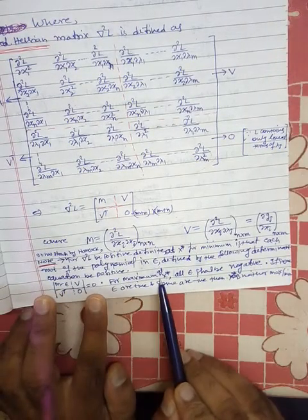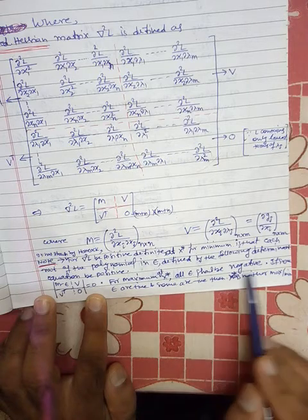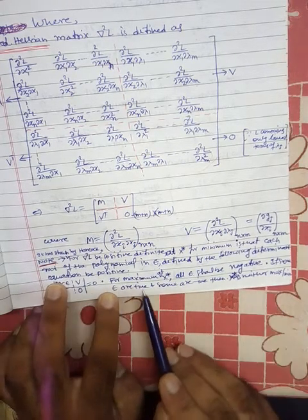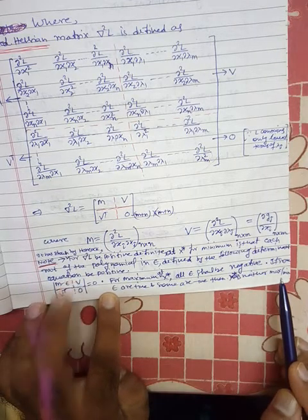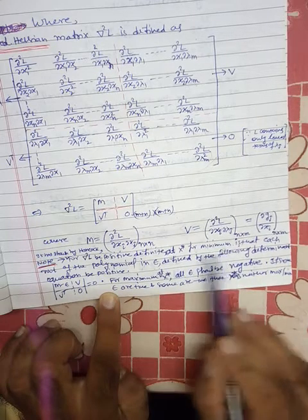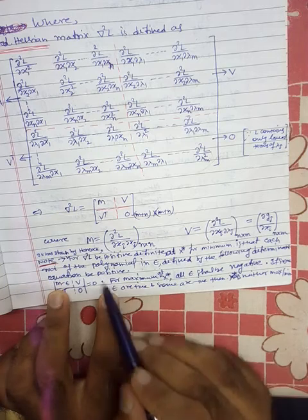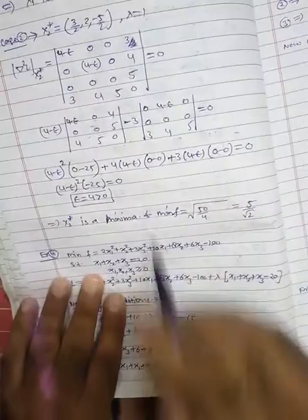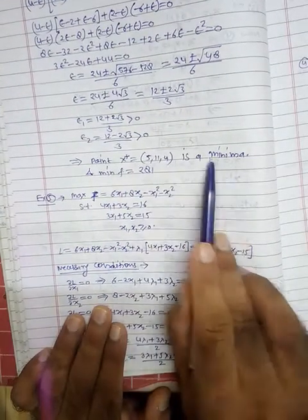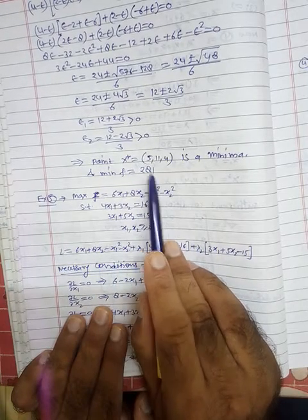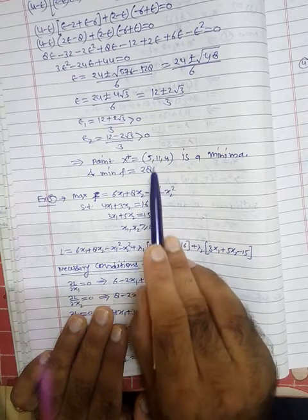Solving this quadratic, ε₁ = (12 + 2√3)/3 (positive) and ε₂ = (12 − 2√3)/3 (also positive). According to the criteria: all epsilon positive → minimum; all epsilon negative → maximum; mixed → neither. Since both epsilon values are positive, x* = (5, 11, 4) is a minimum. Substituting into the objective function gives the minimum value of 281.